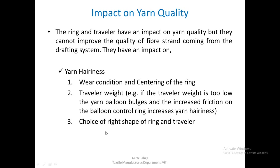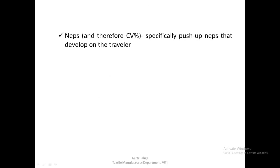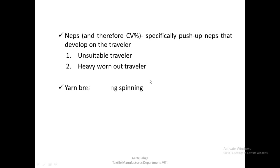Selecting the right shape of ring and traveler also helps reduce yarn hairiness, since too little space between ring and traveler increases hairiness. The second effect on yarn quality is neps — specifically push-up neps that develop on the traveler — and therefore the CV percentage. If neps are too high, one must look for reasons such as an unsuitable traveler or a heavy worn-out traveler.